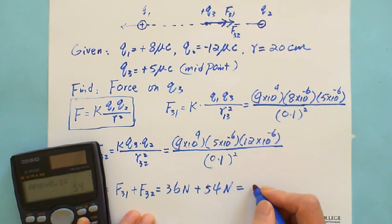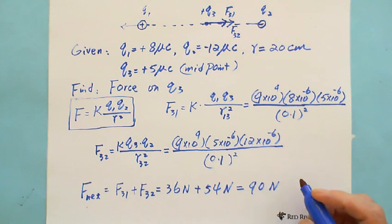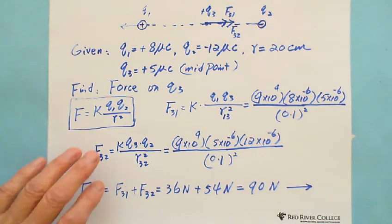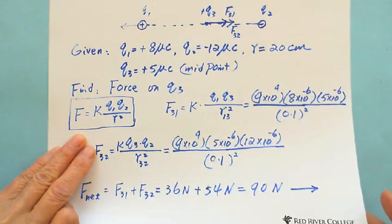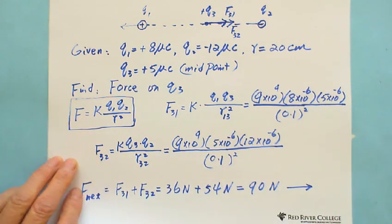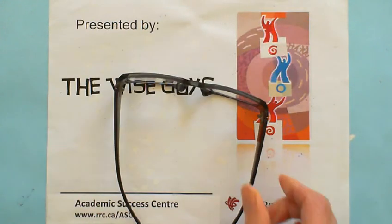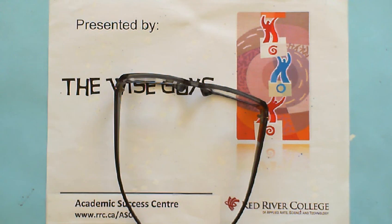Total equals 90 Newton. The direction is going to the right. This is presented by Wiseguys. Thank you.